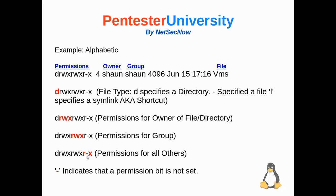Going to the very far right of the permissions column, you have the permissions for all other users that are not the owner of the file or belonging to the group. A regular dash inside the permissions area, as denoted in red in this last example, indicates that the permission bit is not set. In this case, everybody else would have only read and execute permissions but not write permissions, meaning they can't actually change or write to the file — they can only read it or execute it if it's an executable file.